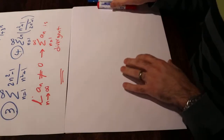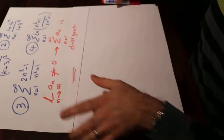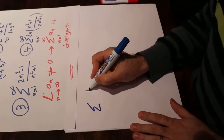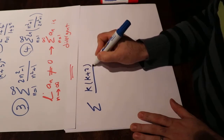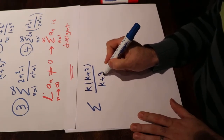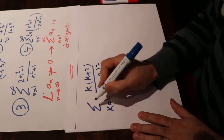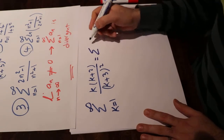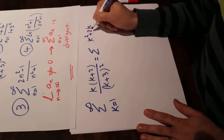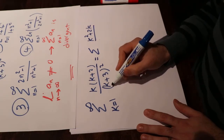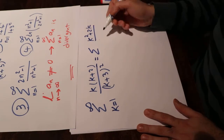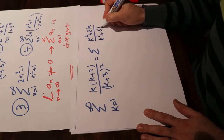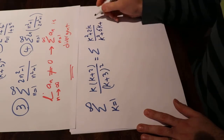Let's look at the first series: sigma k(k+2)/(k+3)² when k changes from 1 to infinity. You can expand the numerator to get k²+2k divided by (k+3)². Expanding the denominator gives k²+6k+9. So the expression becomes sigma (k²+2k)/(k²+6k+9) when k changes from 1 to infinity.